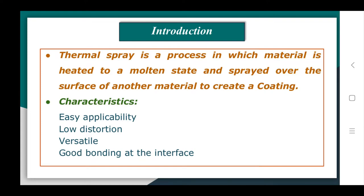This technique sits between weld overlaying and hot dipping. In hot dipping, you melt the metal and deposit it by dipping the substrate into the molten metal. In weld overlaying, you apply a high-power heat source to melt the metal and apply it onto the substrate surface. Thermal spraying is a versatile technique that can handle both low melting point metals as in hot dipping, and high melting point metals as in weld overlay.